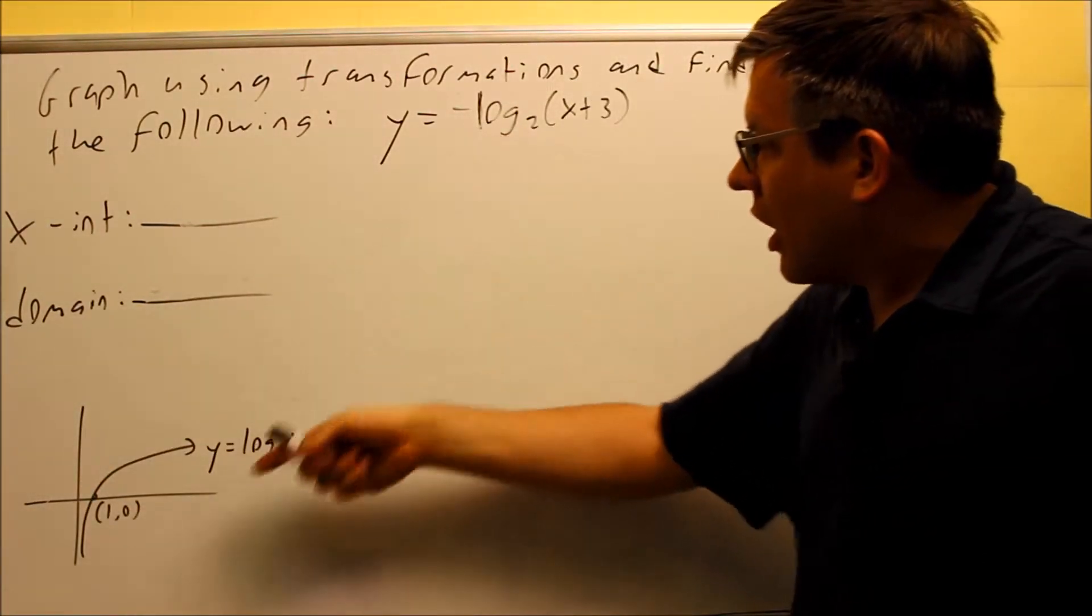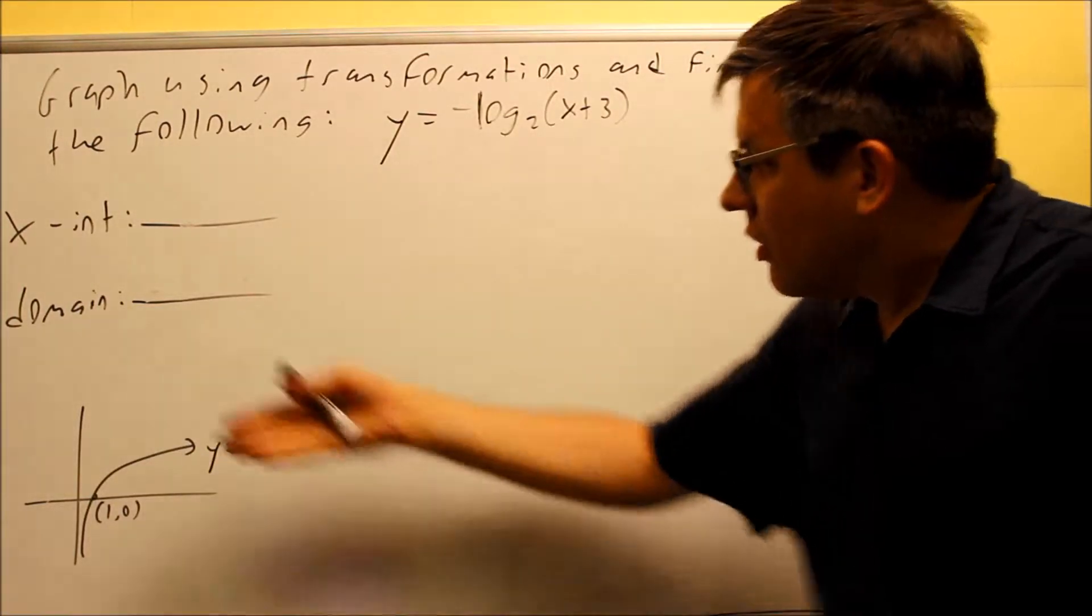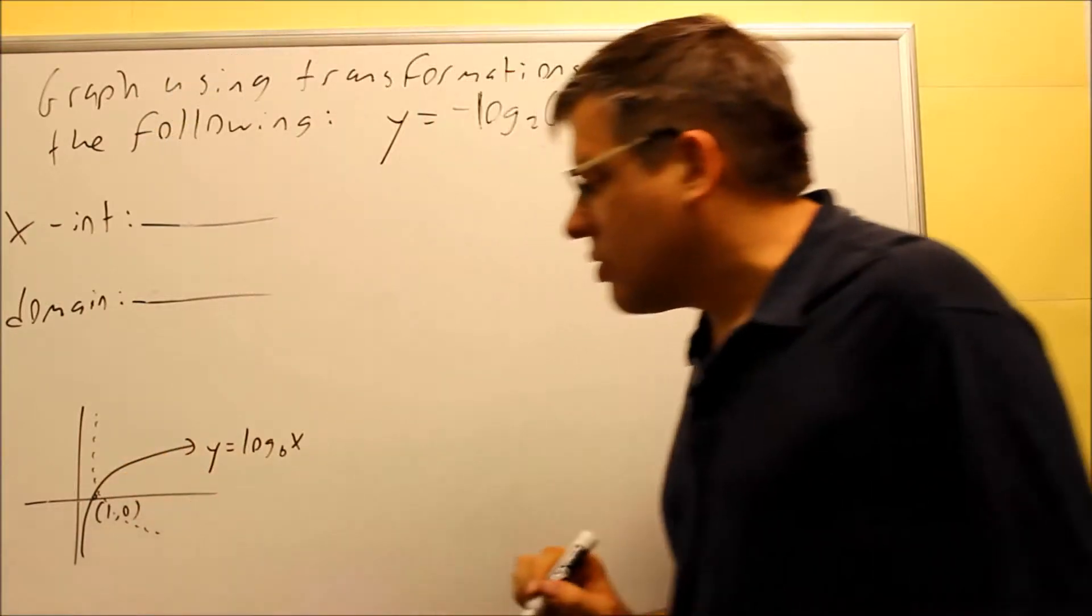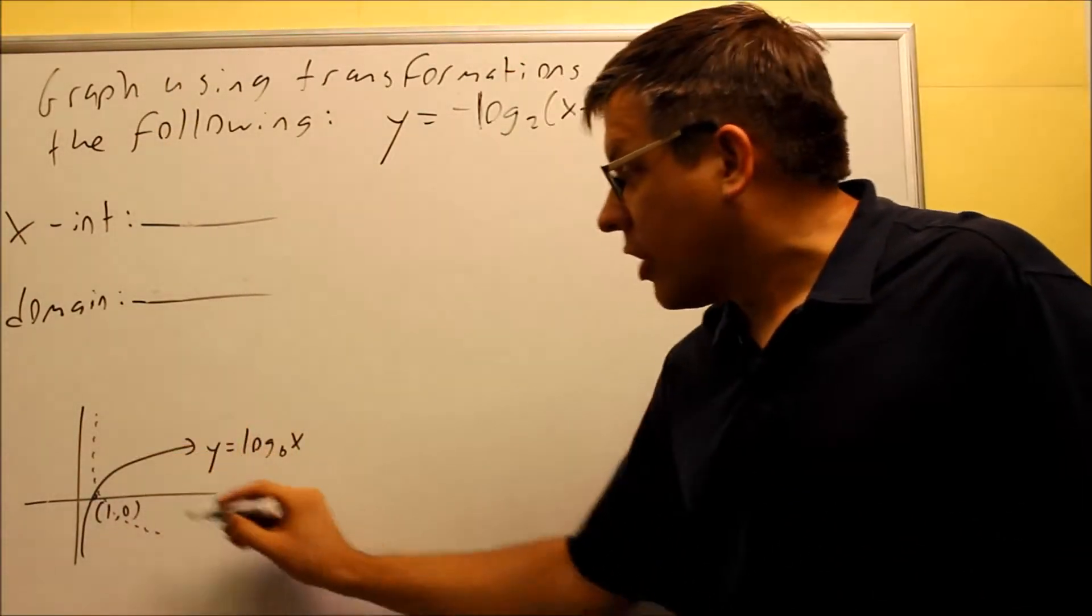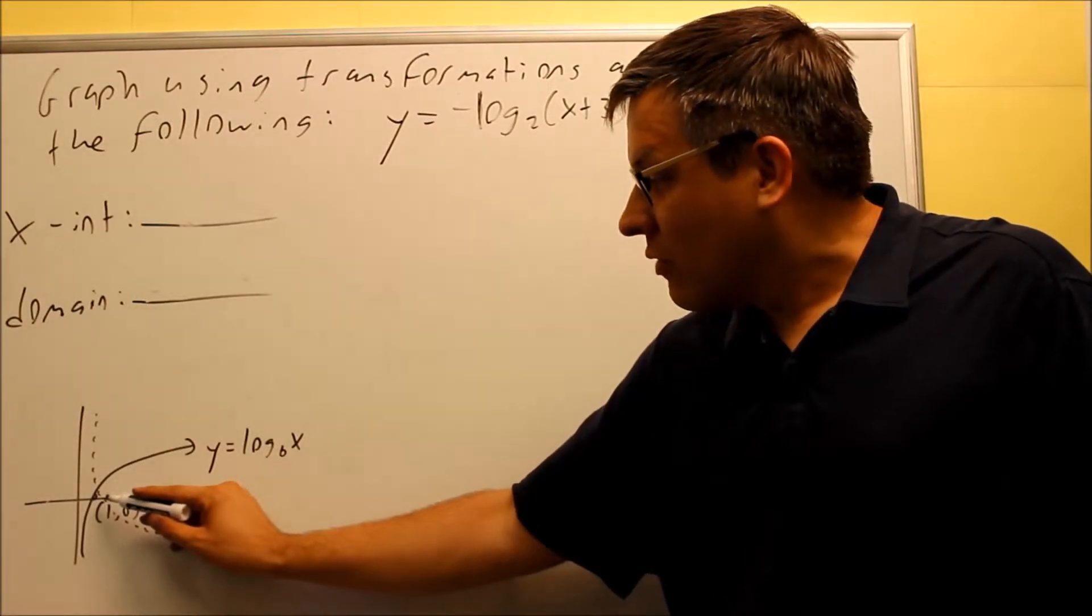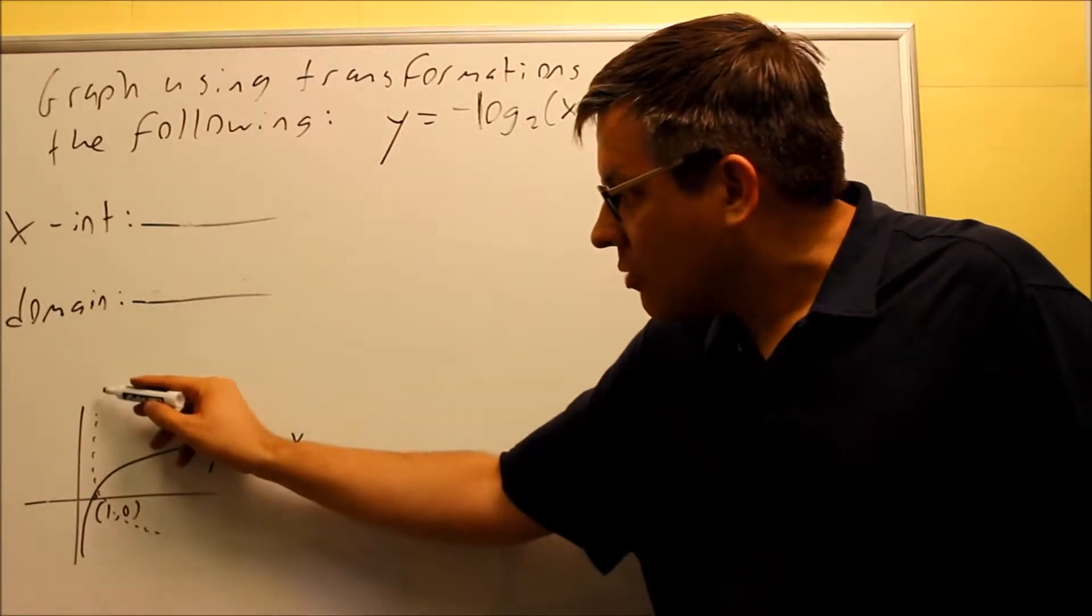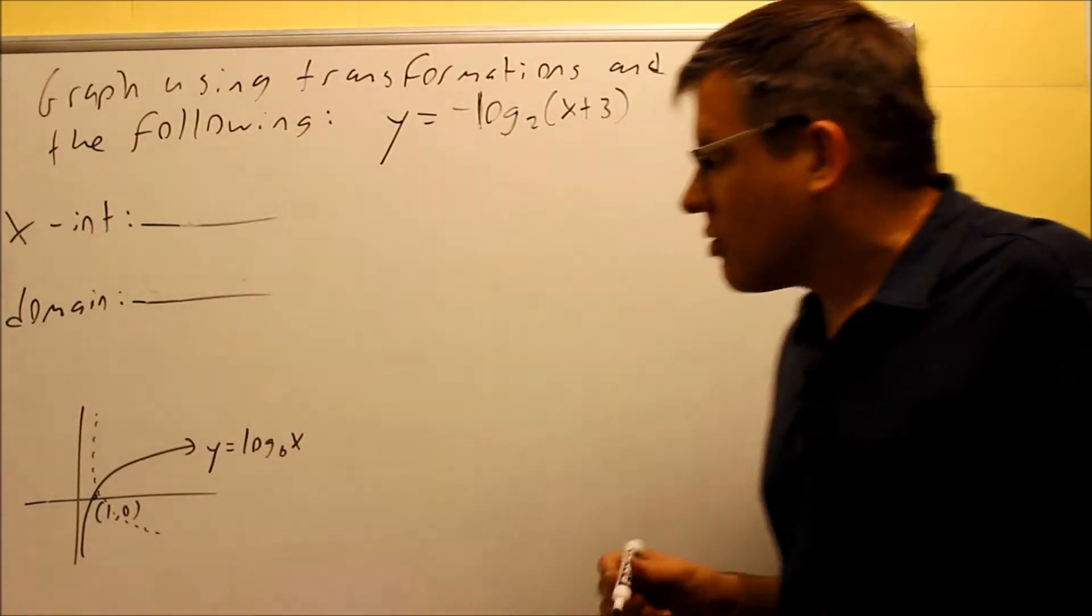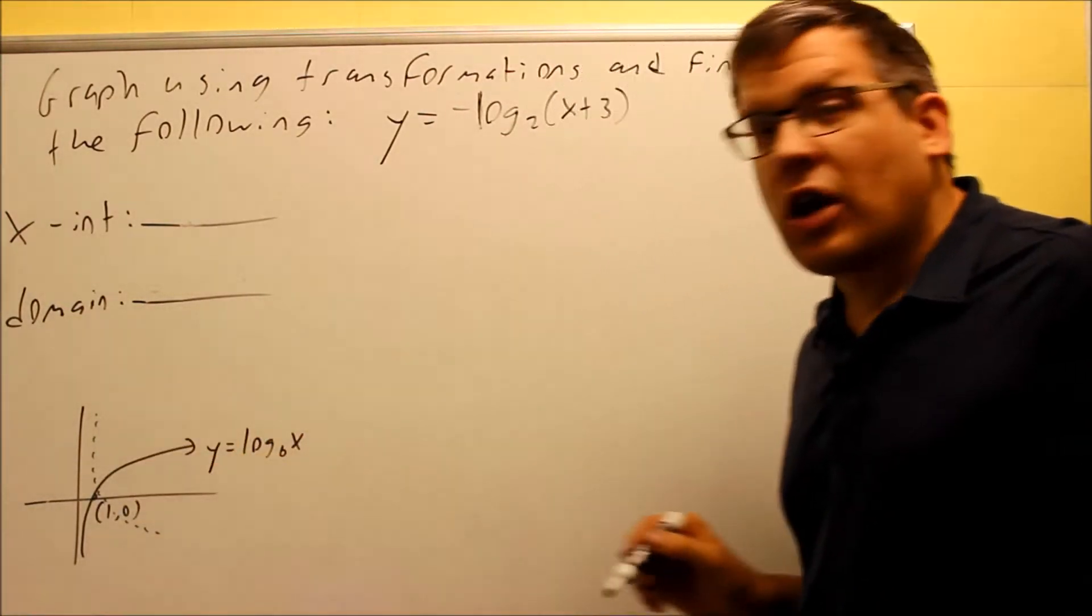So if I take this graph right here, the base graph, and flip it, it's going to look like this. I'm going to draw that in with some dotted lines. So now the graph is going to be falling. It's still going to go through the same spot on the x-axis. We have the same x-intercept, but it's going to be falling as you go from left to right instead of increasing. So this is what my final graph should look like.